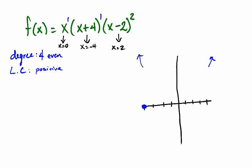So at negative 4, we've got an x-intercept. At 0, we've got an x-intercept. And at 2, we've got an x-intercept. And so what I'm going to do is I'm going to state what the graph is going to do at each x-intercept.